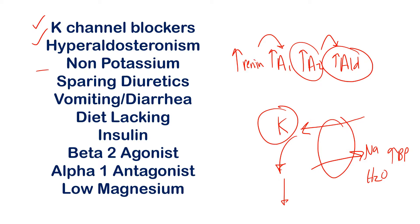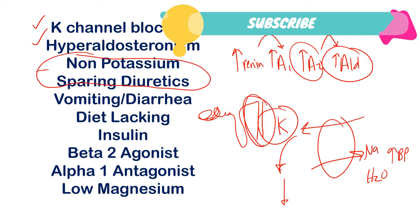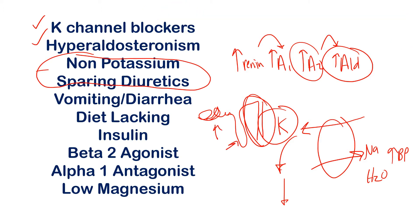For non-potassium-sparing diuretics: the only potassium-sparing diuretics are amiloride and spironolactone, which work at the collecting tubule. All other diuretics — acetazolamide at the proximal tubule, furosemide and ethacrynic acid as loop diuretics, and thiazides at the distal convoluted tubule — cause potassium loss over time. Vomiting and diarrhea also cause hypokalemia since potassium ions are lost through those fluids, and a diet lacking in potassium is another common-sense cause.